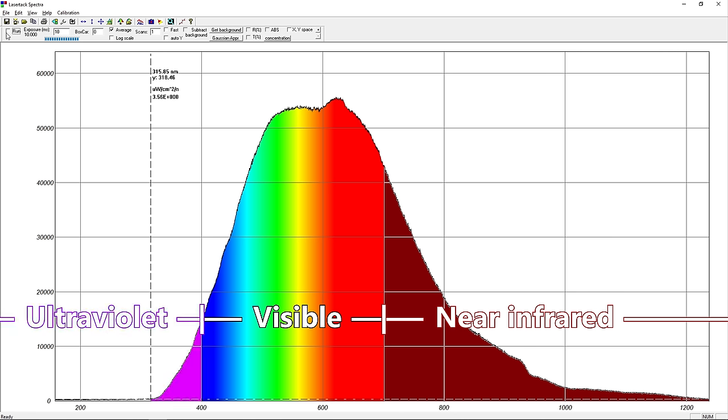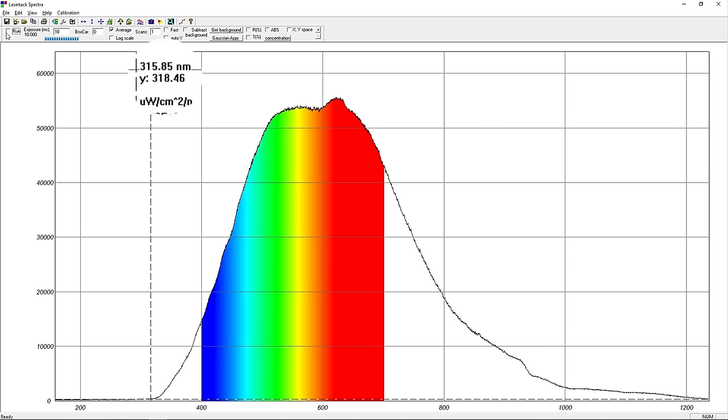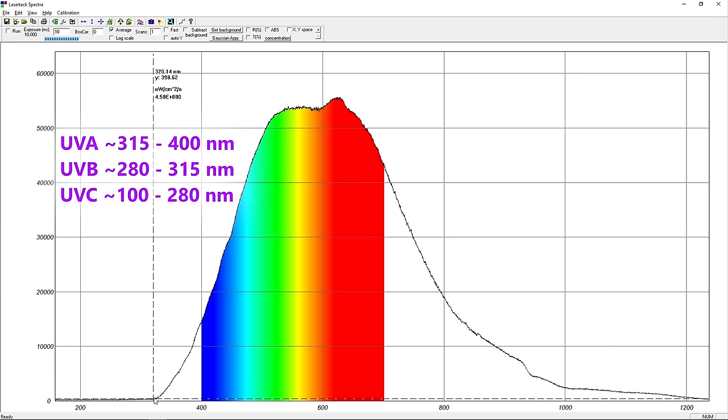I have set the cursor at the border between UVA and UVB, around 315 nanometers. So the ultraviolet output is in the UVA range. Looks like the output is negligible below 325 nanometers. No UVB or UVC.